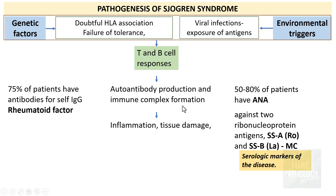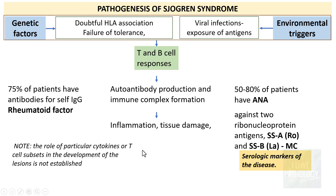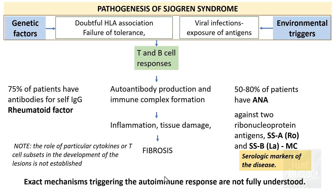Once immune complex formation occurs, there is inflammation leading to tissue damage. It is important to note that we do not know exactly which cytokines or T cell subsets are involved in the development of the lesions. This extensive damage ultimately leads to fibrosis, but the exact mechanism triggering the autoimmune response in Sjogren's syndrome is not fully understood.